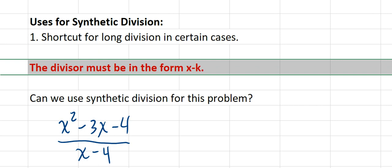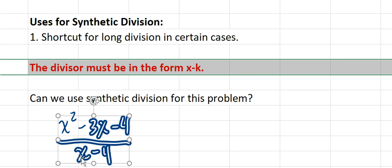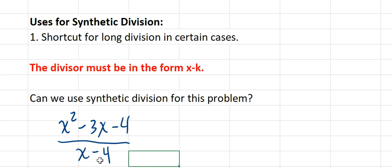The divisor must be in the form x minus k. That is a linear binomial where the lead coefficient of x is 1. Also, the degree of the divisor must be 1 — it has to be linear. Both of those conditions are satisfied for an example like this, so we could use synthetic division to perform that division.